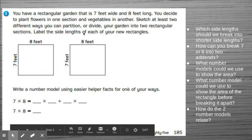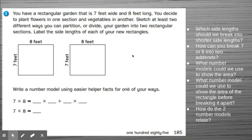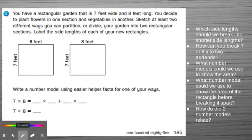So let's look at this rectangle. This is number 1 on page 185. You have a rectangle garden that is 7 feet wide and 8 feet long. You decide to plant flowers in one section and vegetables in another. Sketch at least 2 different ways. You could partition or divide your garden into 2 rectangular sections. Label the side lengths of each of your new rectangles. So I'm looking at my rectangles and I have 2. I have the 7 by 8 two times.